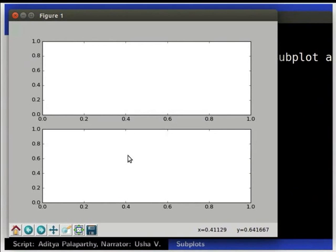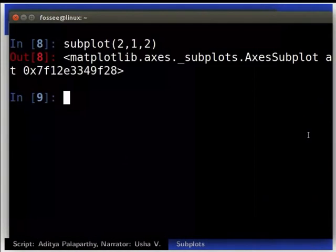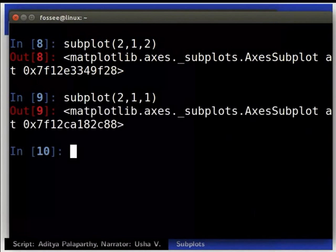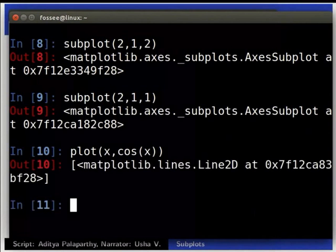Now, we can draw plots in each of the subplot area using the plot command. Type, subplot, inside brackets, 2 comma 1 comma 1. Plot, inside brackets, x comma cos x.